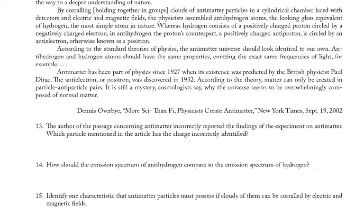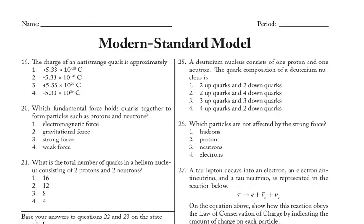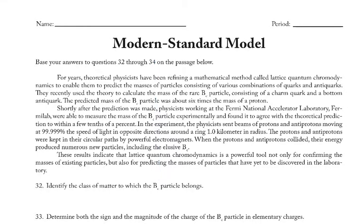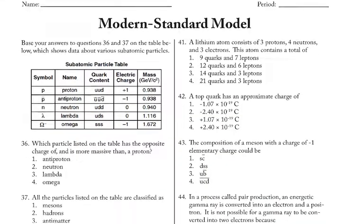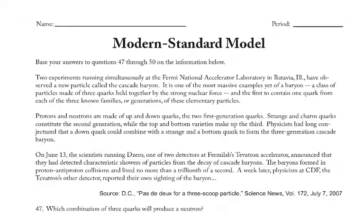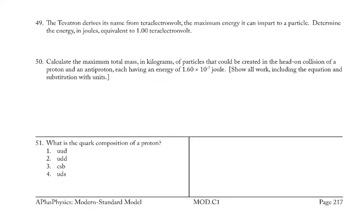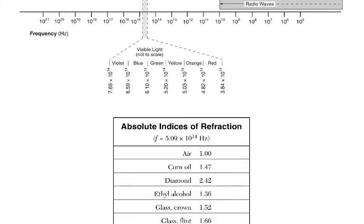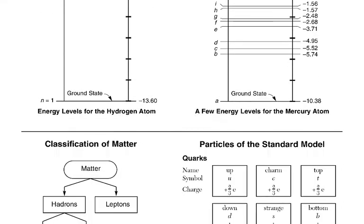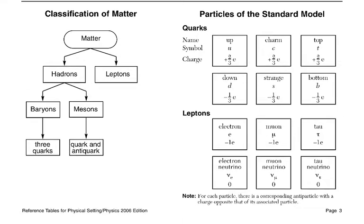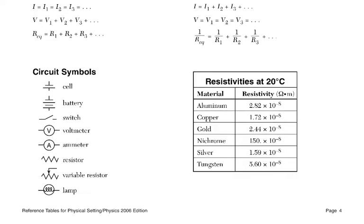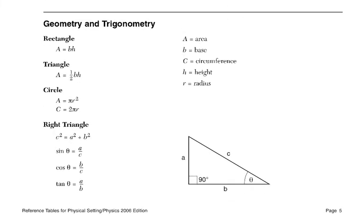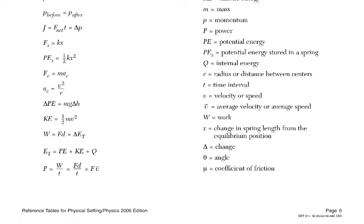Here's the first page of the worksheet, second page, third page, page four, page five. And then here's our handy dandy reference table — page one, page two, page three. We're going to need that bottom right there. Page four I don't think we'll need. Page five has some modern physics equations like E equals mc squared, and then page six from the beginning of the year.